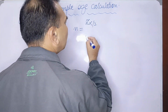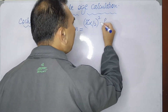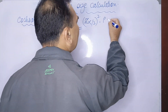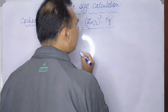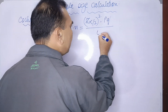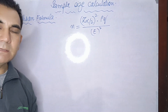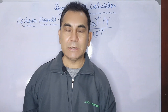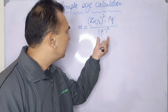The Cochrane formula is: n = (z_α/2)² × P × Q / e², where the bound of error (e) is the standard error, calculated as sigma divided by root n, which gives us the bound of error.